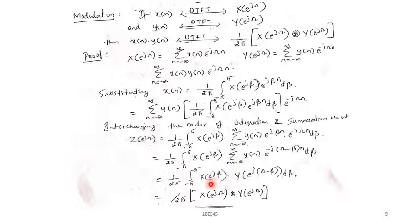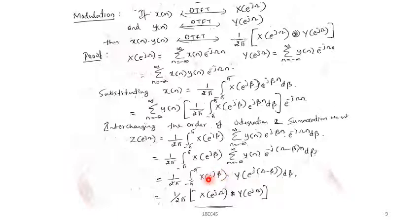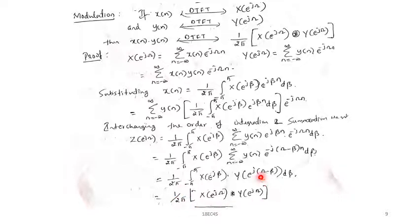So Z(e^{j\omega}) = (1/2π)·integral from −π to π of X(e^{j\beta})·Y(e^{j(\omega−\beta)})·dβ. Comparing with the convolution equation — where one term is X(e^{j\beta}) and the other is Y(e^{j(\omega−\beta)}) — this is equivalent to X(e^{j\omega}) circularly convolved with Y(e^{j\omega}), divided by 2π. This is the modulation property: multiplication in the time domain equals circular convolution in the frequency domain.